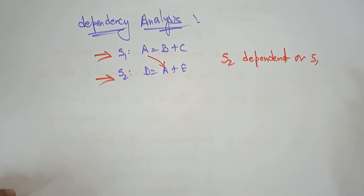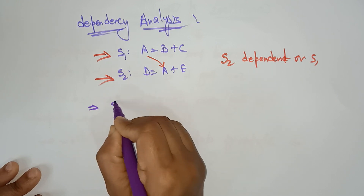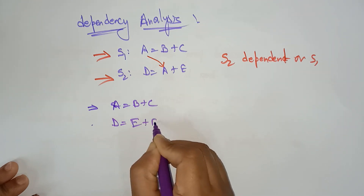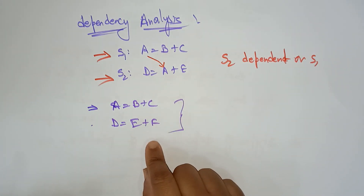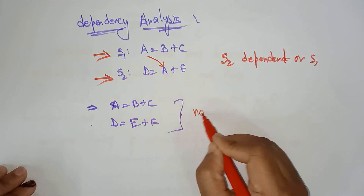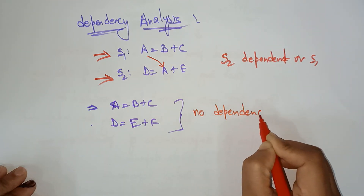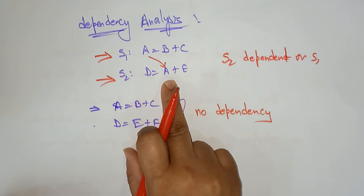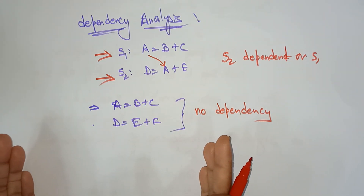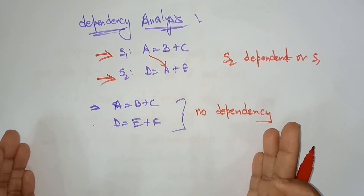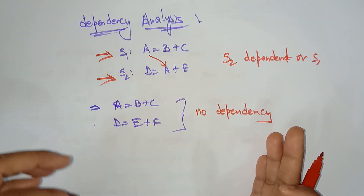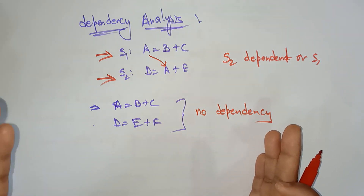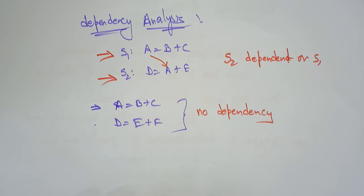Suppose I take another pair of statements: A = B + C and D = E + F. If you observe clearly, these two statements have no dependency. But in the previous case there was a dependent relationship between the two statements. This analysis is represented graphically using a task dependency graph, which allows us to represent and analyze the equations graphically.